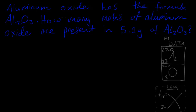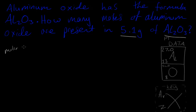Let's take a look at our first question. Aluminum oxide has the formula Al₂O₃. How many moles of aluminum oxide are present in 5.1 grams of Al₂O₃? In this question we've got the mass and we've got the formula. The equation we use is: molar mass equals mass divided by number of moles.